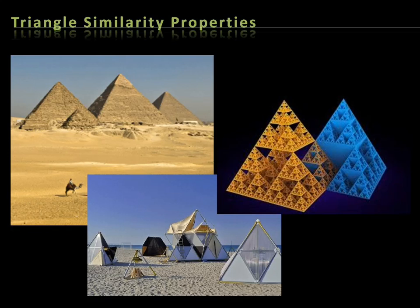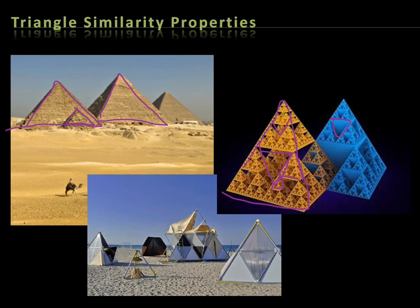Just for fun, I put some pictures of similar triangles on here. You can see the famous pyramids of Egypt — these are similar triangles. There's also a really interesting one with a bunch of triangles inside of a big triangle. And this right here — someone went crazy with some triangles and built some tents or houses. These triangles are all the same shape but different sizes, which is the idea of similarity.